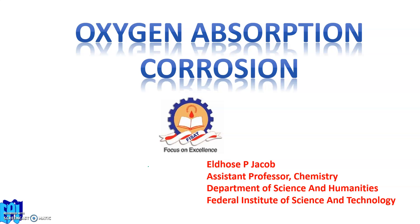Hello everybody, welcome to the next video session on the topic oxygen absorption. Let us make a quick remembering about corrosion. We know that corrosion means the deterioration or the destruction of materials. It is mainly of two types: wet corrosion and dry corrosion. Wet corrosion is mainly taking place in the presence of moisture or water. In this session, I am going to discuss the corrosion technique which is taking place by absorption of oxygen, which is a type of wet corrosion.